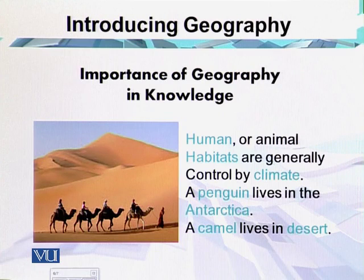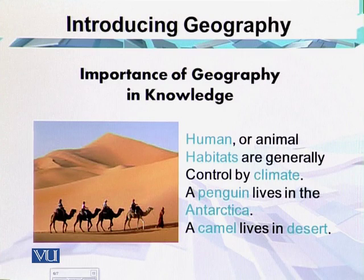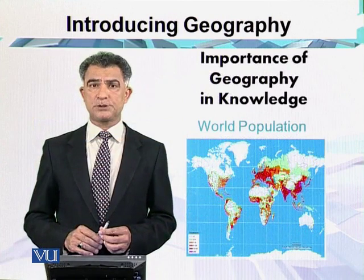In desert areas, water is very difficult to obtain even for drinking purposes, and domestic life suffers due to high temperatures. Temperature limits life in desert regions. Whereas penguins live in Antarctica because that kind of animal only has a suitable environment in ice-covered areas. Most forms of life are controlled by climatic conditions.